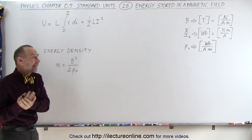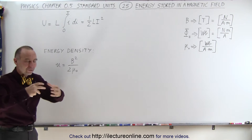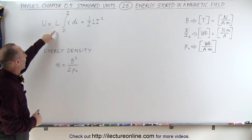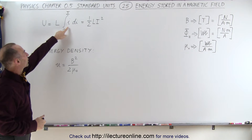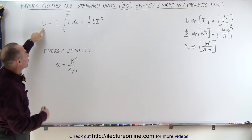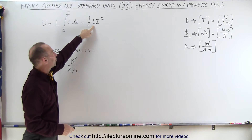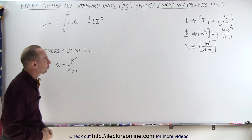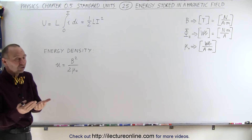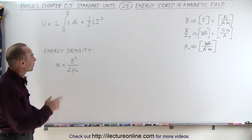We can calculate the energy stored in a magnetic field when we assume that we have a coil and try to drive some current through it. As the current builds up to its final value, the energy will equal one-half times the self-inductance times the current through the coil squared. That should have units of energy — units of joules. Let's see if that's indeed the case.